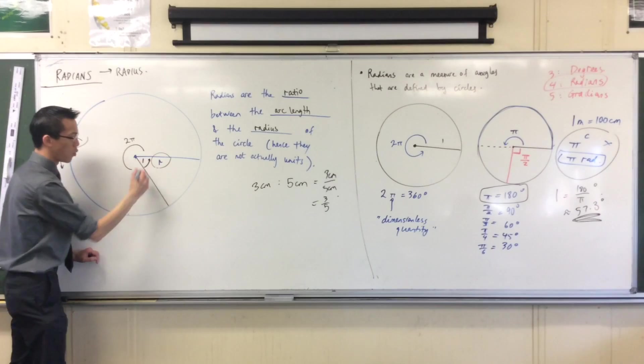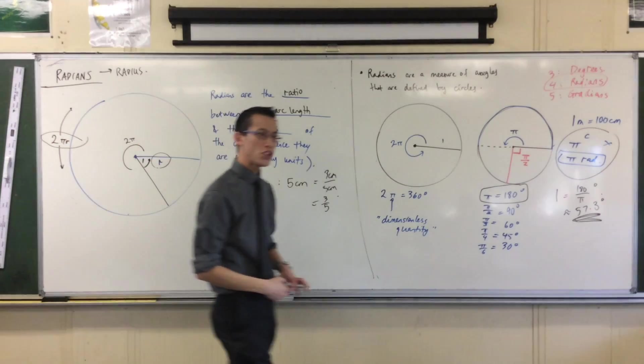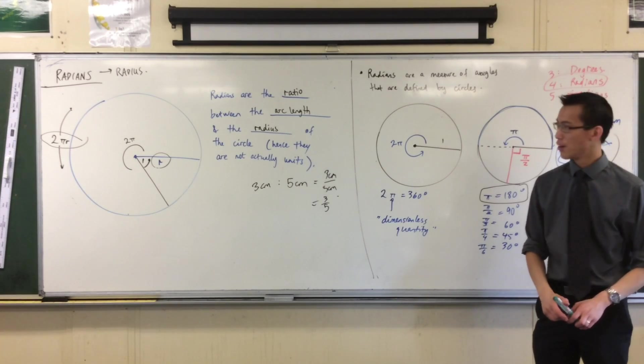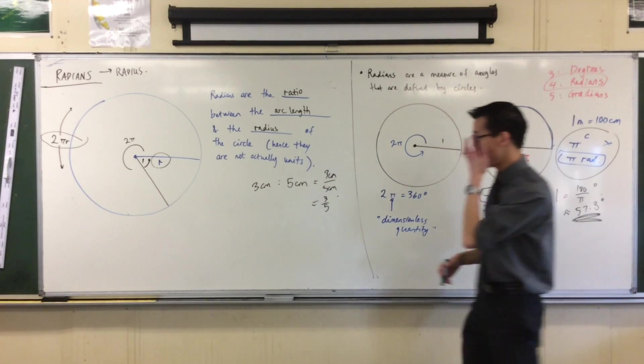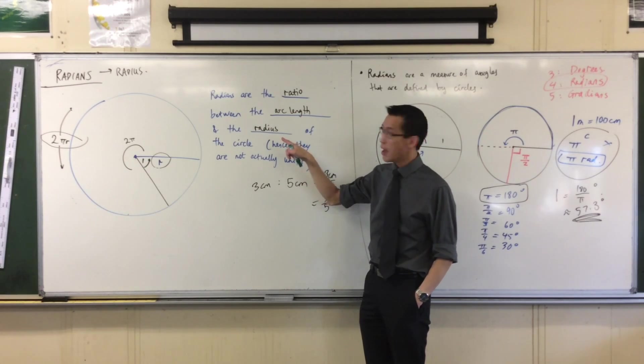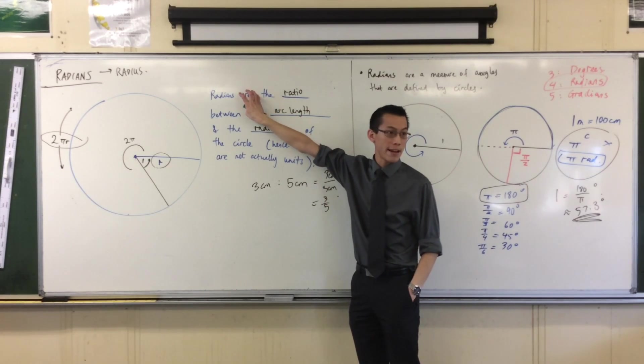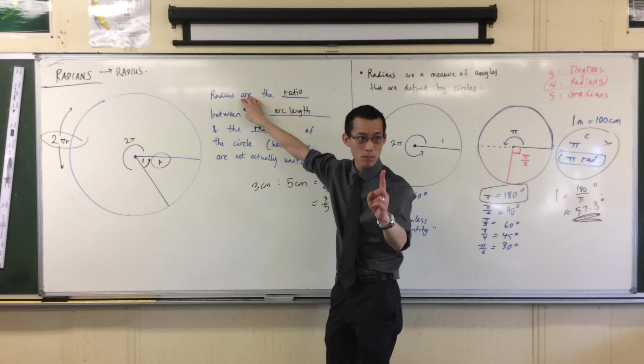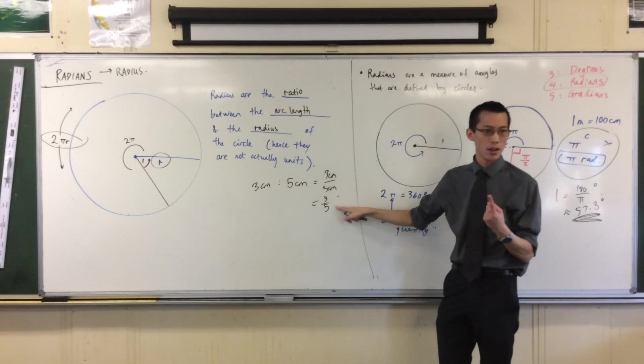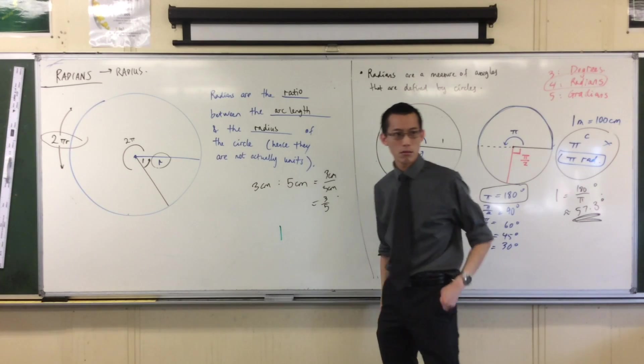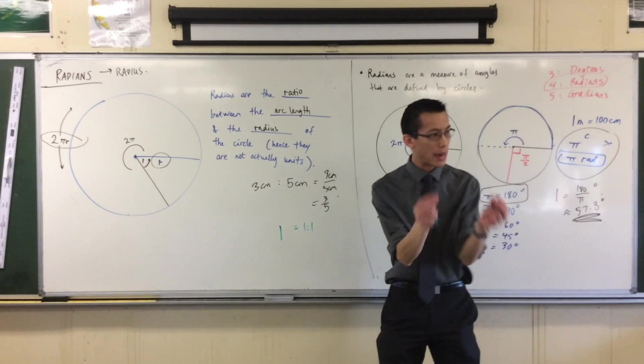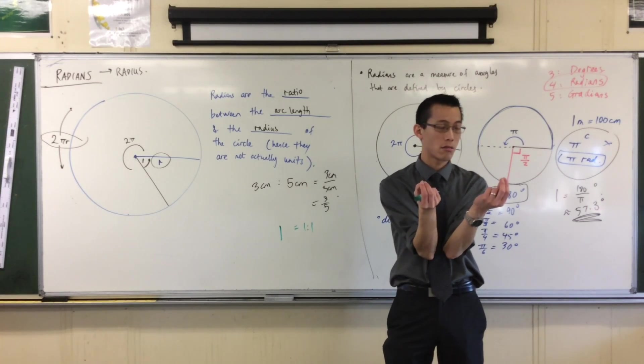Now when you look at this one radian, how does it connect all of these pieces together? Well, if radians are the ratio between the arc length and the radius, and if the particular number of radians I'm interested in is one, what ratio is the number one? Like this is the ratio three to five. What ratio is the number one? It's one to one, is it not? One to one means my two quantities are the same size.